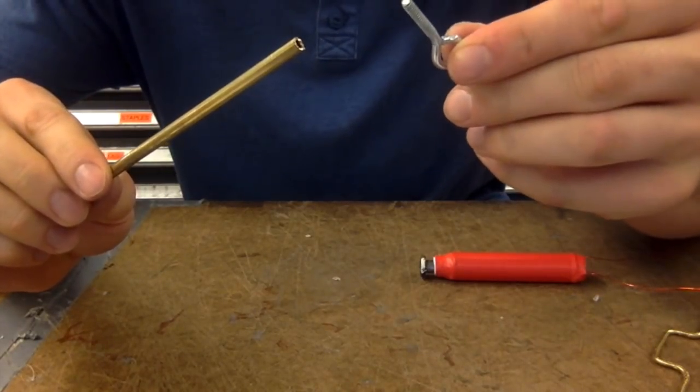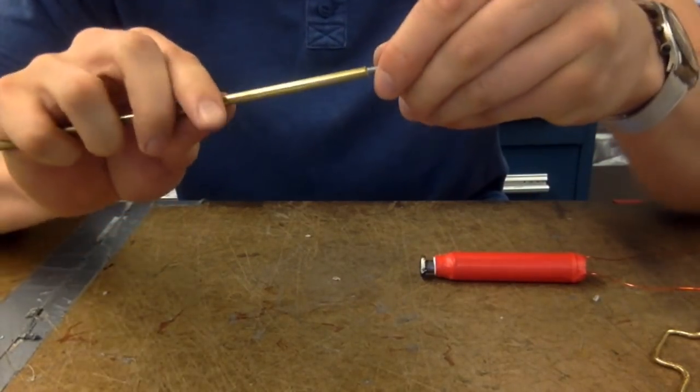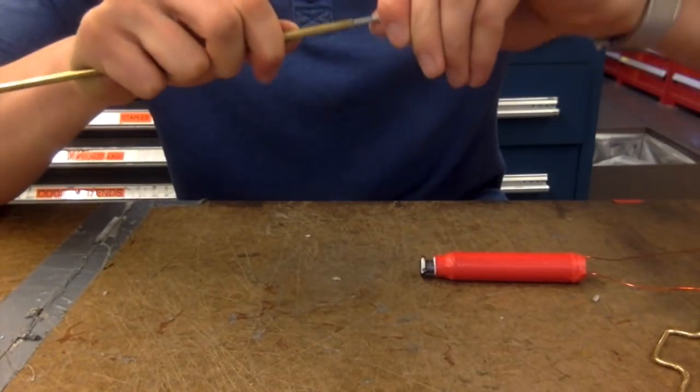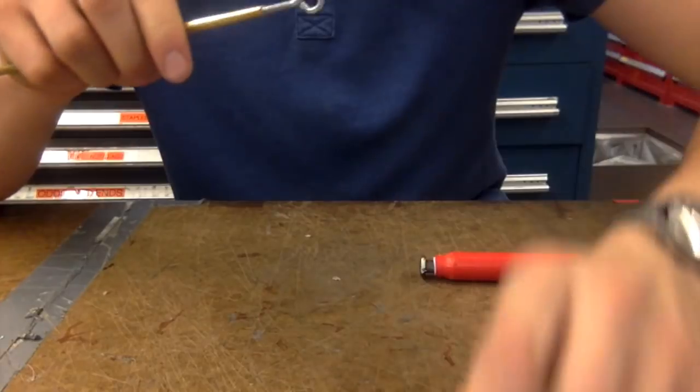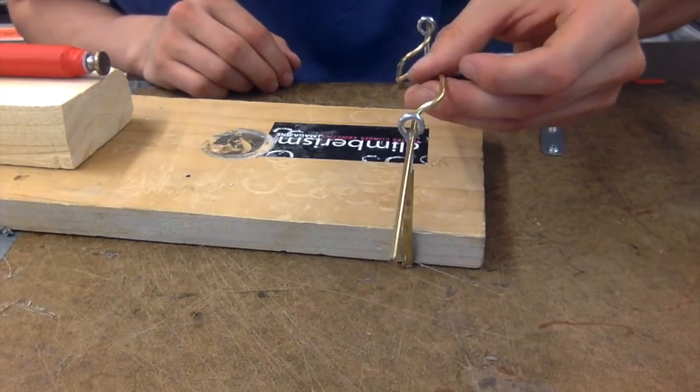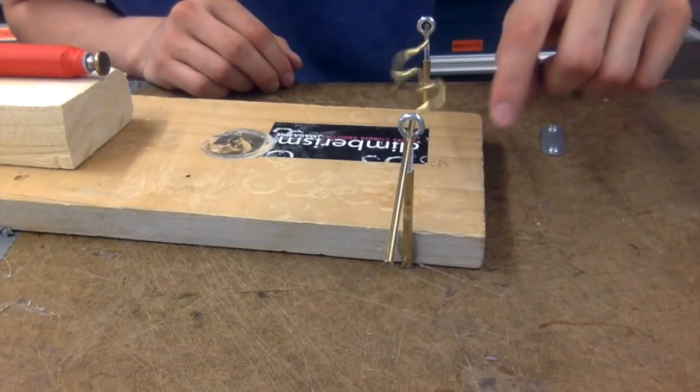The axles for the shaft are made out of some brass piping and these eye screws. I've temporarily attached them to some scrap wood with hot glue to test them out, and so far things are looking pretty good.